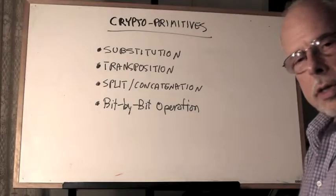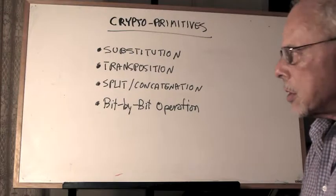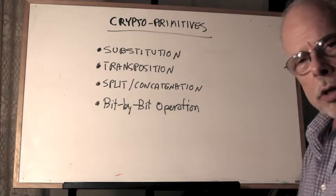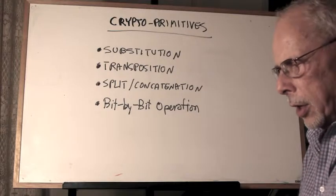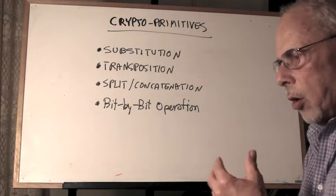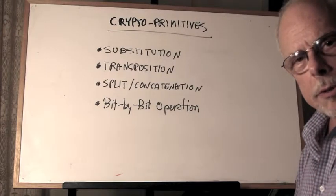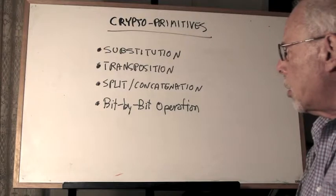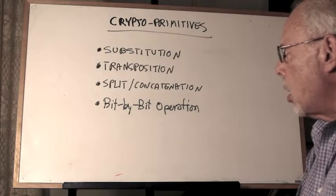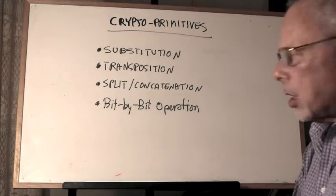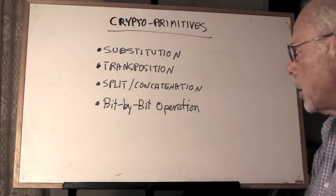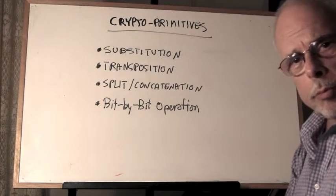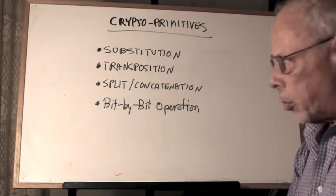Modern ciphers as well as old ciphers can be viewed as some combination of basic operations which we call primitives. The most common among them are substitution, transposition, split and concatenation, and bit-by-bit operation. Let's go over them quickly so we get a sense of what they are.